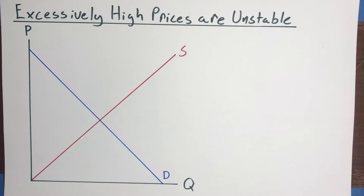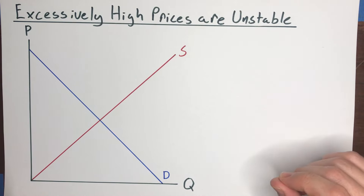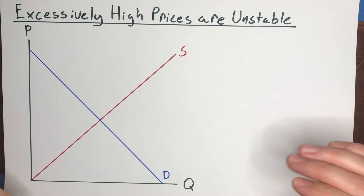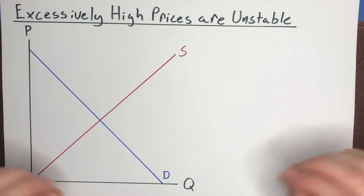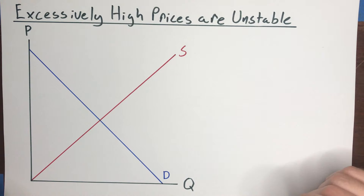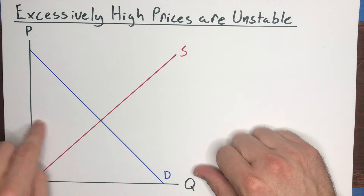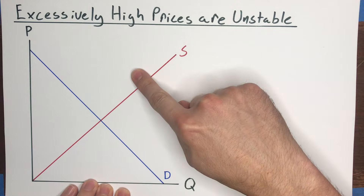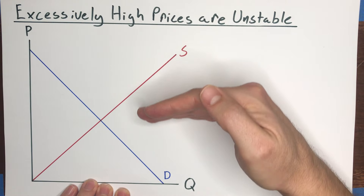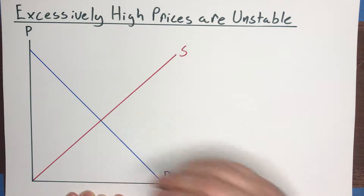In the last video we talked about how important it is for markets to get the price exactly right in order to extract all of the gains from trade. In this video we're going to talk about why we have good reason to expect markets to find the right price even when no expert is planning what the price will be or should be in the market.